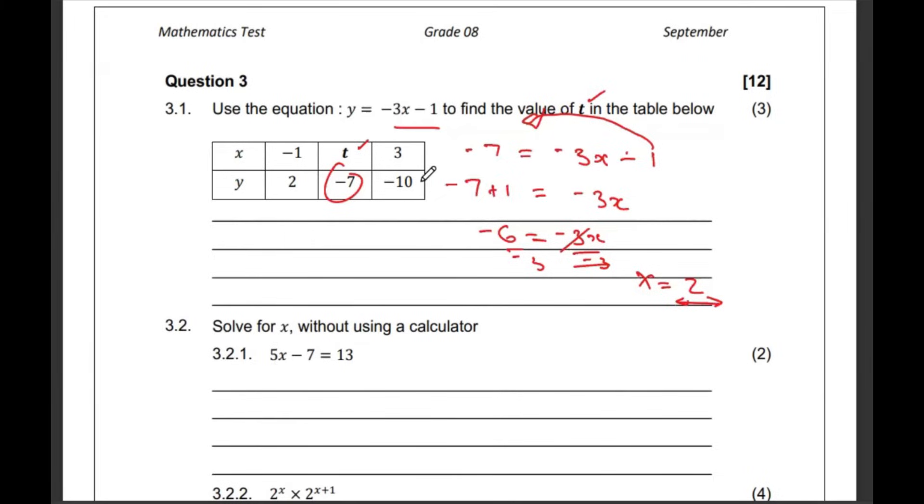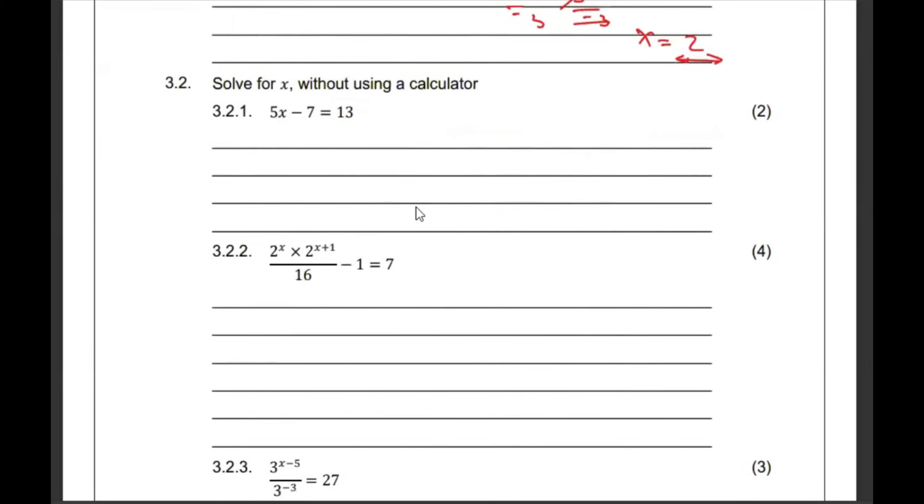Then 3.2 solve for x without a calculator. Step number 1, move the 7 that side. Meaning that 5x is equal to 13 plus 7. 5x is 20. Divide both sides by 5. Meaning that x is 4.